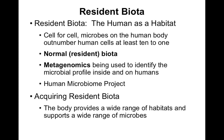We all have resident microbiota — tons of normal microbiota. These are non-pathogenic because they live within us but don't take advantage of us. As soon as they take advantage of us and try to take more than we want to give them, they become pathogens. Cell for cell, microbes on the human body outnumber human cells at least 10 to 1. There are tons of microbes on our skin, in our digestive tract, in our nose — everywhere, with a few exceptions: the brain, the reproductive tract (especially the testes in males), the eye, and the lower lungs.